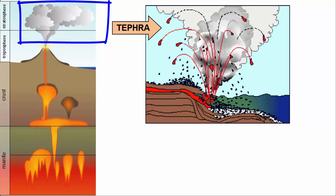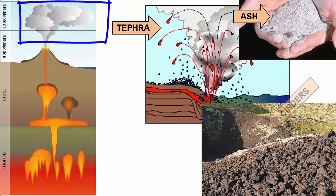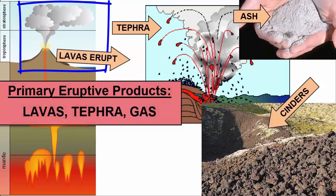When lava is ejected sky-high in an explosive eruption carried by escaping gases, it cools and solidifies quickly as it's thrown through the air. We call these now-solid ejected particles tephra, which come in all sizes. Mud or flower-sized particles flash freeze to form glass particles called ash. We call the larger rounded particles cinders. Lavas, tephra, and gas are the primary eruptive products of volcanism.